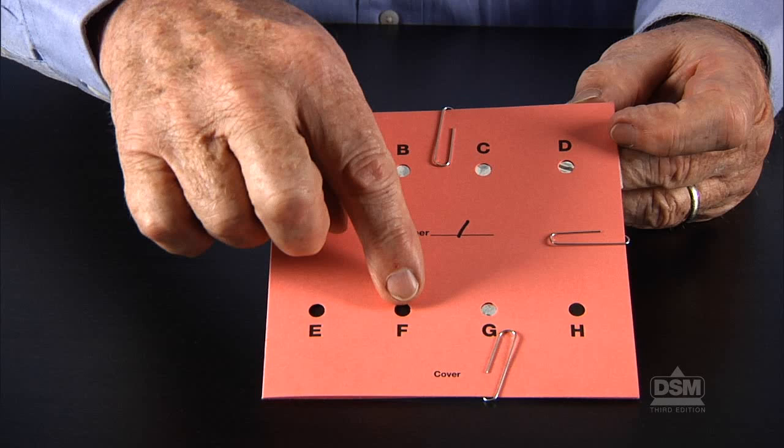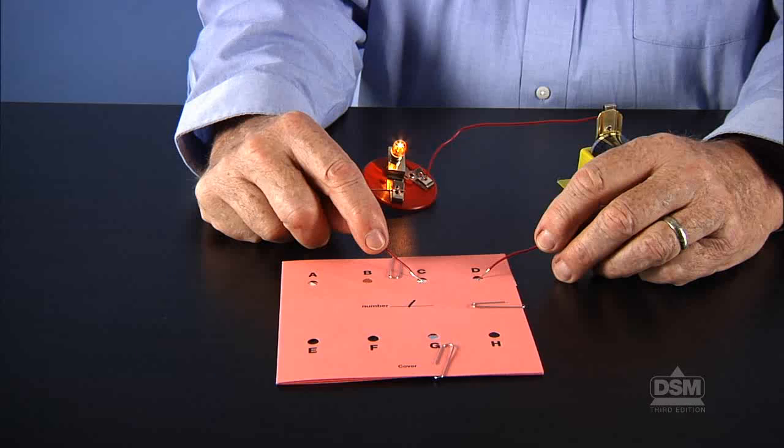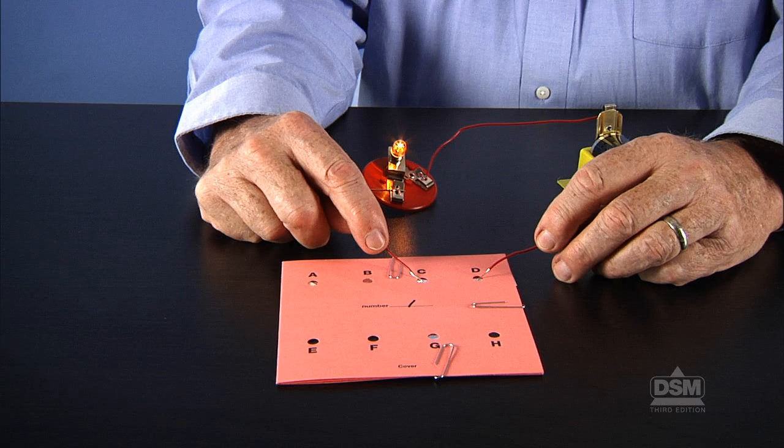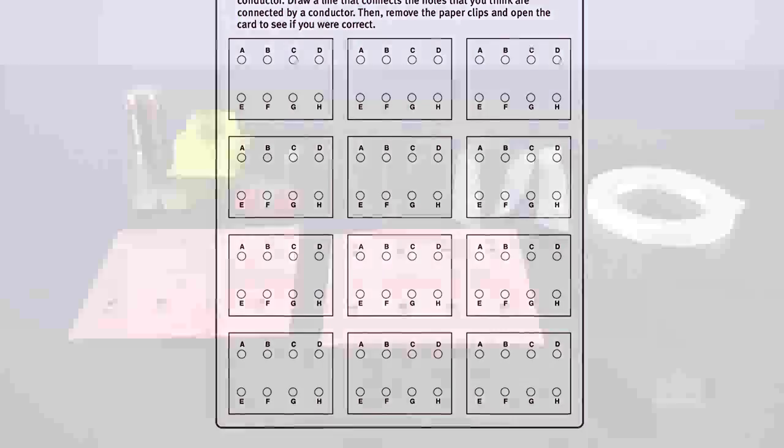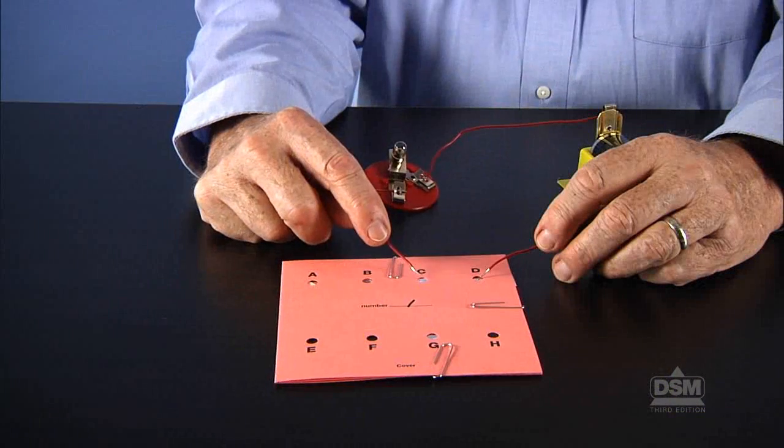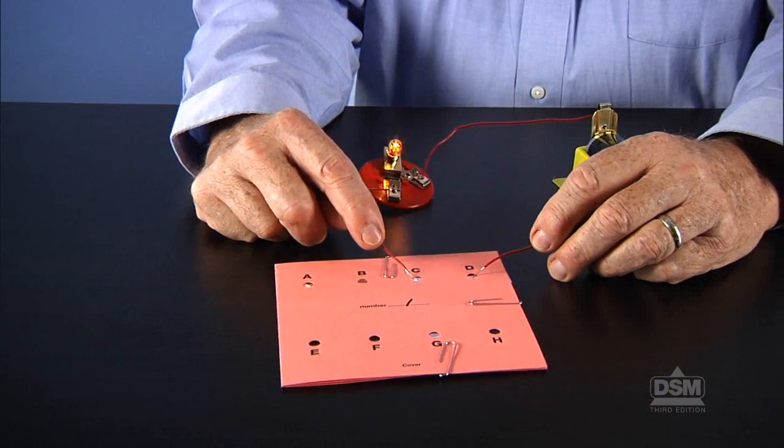Inform the class that each team will then construct their own circuit puzzle, exchange it with one made by another team, and test it to determine which holes are connected by conductors in the hidden circuit. Distribute a copy of Activity Sheet 12 to each student and the materials to each team. Make sure to have masking tape available to all teams. Guide teams to construct a tester and use it to examine their prepared circuit puzzle.